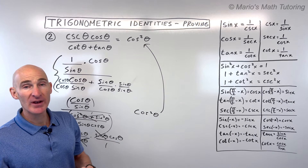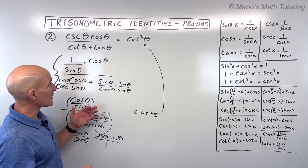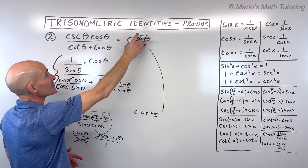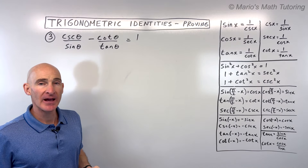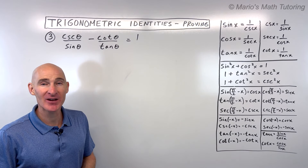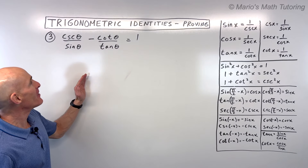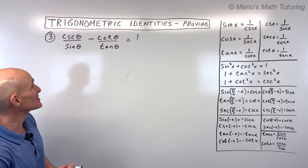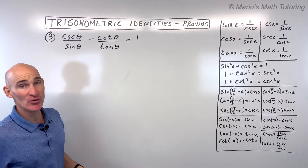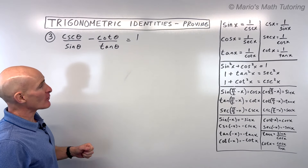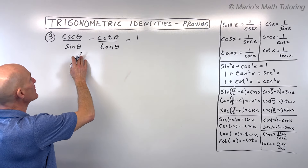For example 3: cosecant of theta divided by sine of theta minus cotangent of theta over tangent of theta — we want to show that equals 1. The left side is more expanded, so let's start there with basic substitutions. Cosecant theta is 1 over sine theta, cotangent theta is cosine theta over sine theta, and tangent theta is sine theta over cosine theta. Any quantity can be written as a fraction by putting it over 1, and dividing by a fraction is multiplying by the reciprocal.